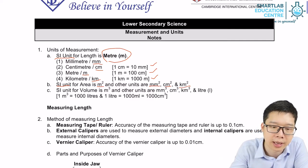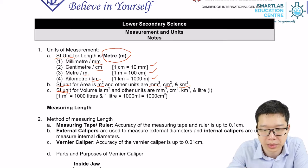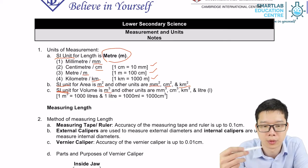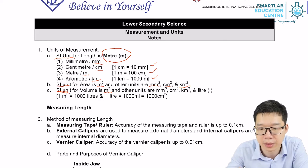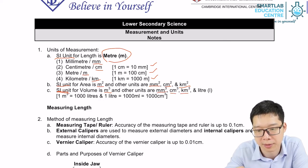Similarly, the SI unit for volume is meter cubed. So if you measure your length in mm, cm, km, you will have mm cube, cm cube, and km cube.